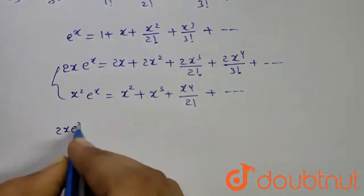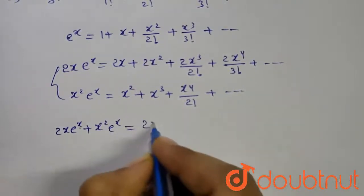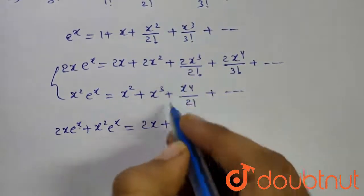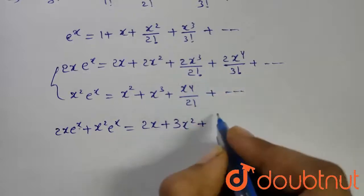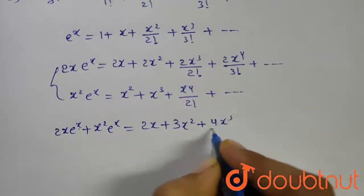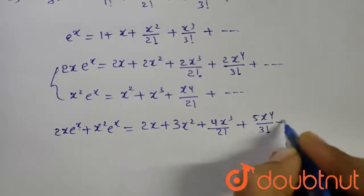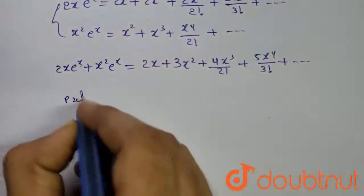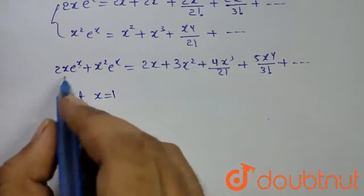we get 2x·e^x plus x squared·e^x equal to 2x plus 3x squared plus 4x cubed divided by 2 factorial plus 5x to the power 4 divided by 3 factorial, and so on. Now, put x equal to 1.